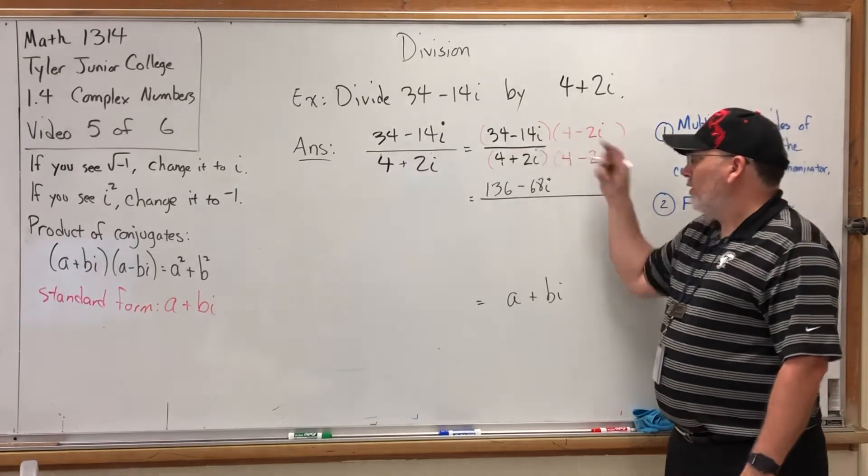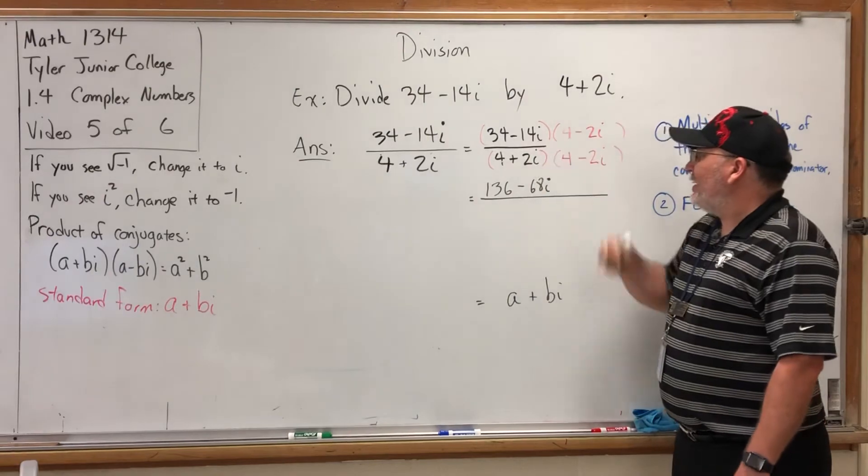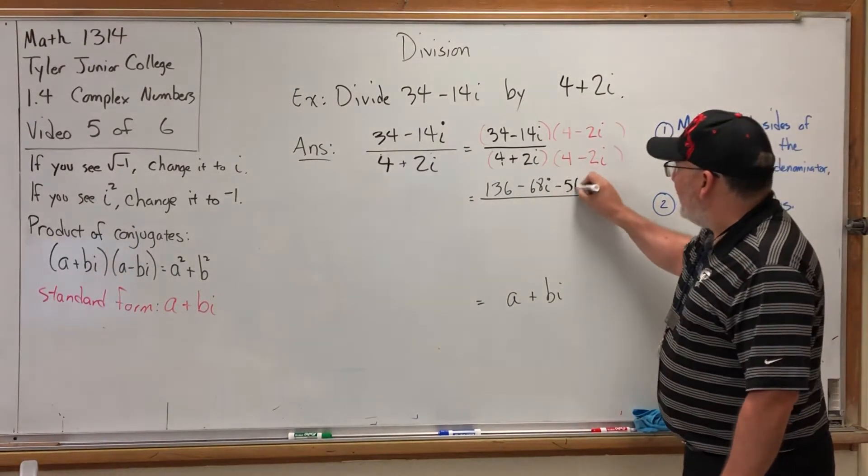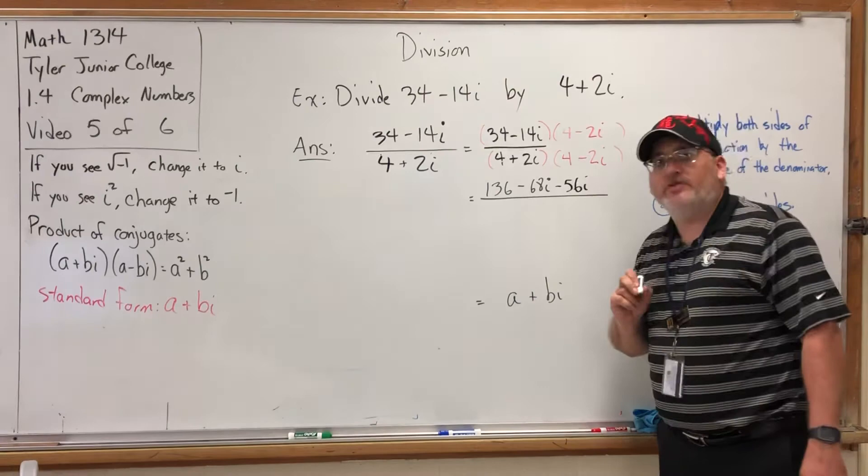The inside part of FOIL on the top: -14i × 4 is -56i. And feel free to use a calculator for these products. And then the last part of the FOIL process on the top: -14i × -2i—negative times negative is positive, 14 × 2 is 28, and i × i is i².